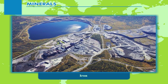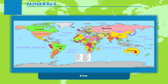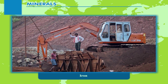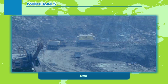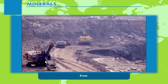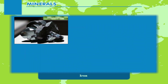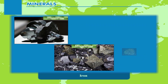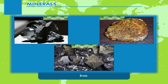About half of the world's iron is found in China. Australia, Brazil, and Russia are also important producers. India has large reserves of good quality iron ore but needs to improve its methods of mining for better results. There are three types of iron ores: Hematite, Magnetite, and Limonite.